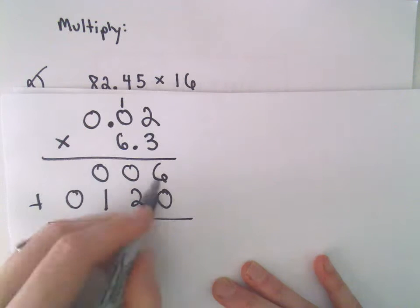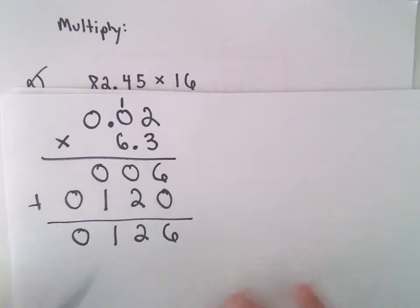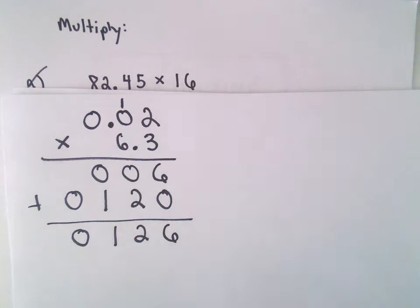So now if we add, 6 plus 0 is 6, 0 plus 2 is 2, 0 plus 1 is 1, 0 plus nothing is 0. So now I've got 0, 1, 2, 6. It's a matter of finding where to put the decimal place.